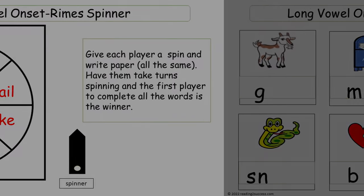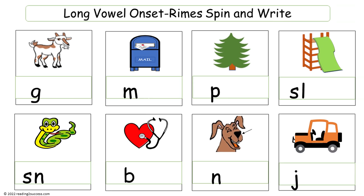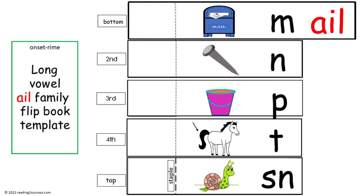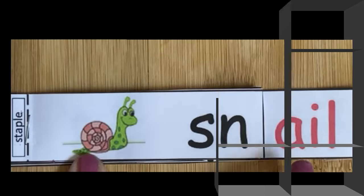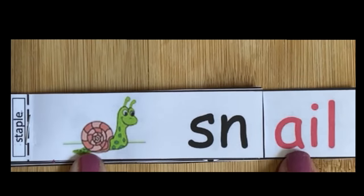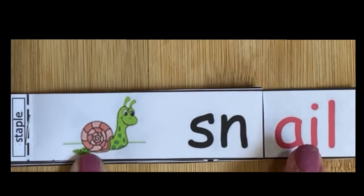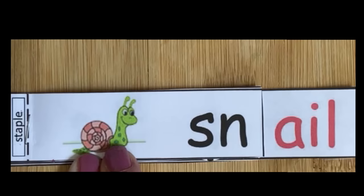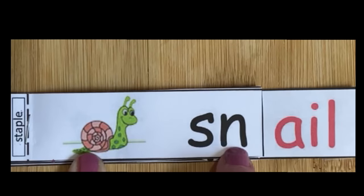At the end of this video, kids should be able to play the long vowel onset rhymes spin and write game. Begin by introducing kids to the long vowel team A-I. This is our first long vowel onset in rhyme — a vowel team where A is heard and it is long, I is silent, so together they make the long A sound. With the L we have 'ale.' We look at the picture, then we look at our consonant blend, which is our onset.